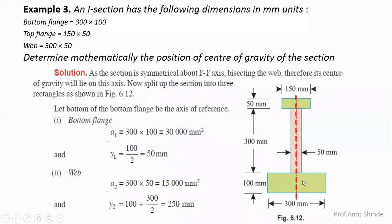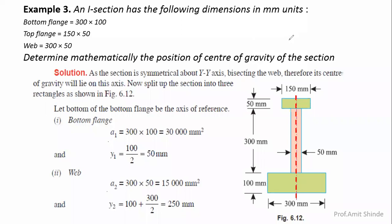Let us start with the bottom flange. We find the area of the bottom flange first, and then locate its center of gravity from the bottom. From the geometry, the length and width are 300 by 100 millimeters, giving an area of 30,000 square millimeters. The CG distance from the bottom is y1, which equals 100 divided by 2, giving 50 millimeters.